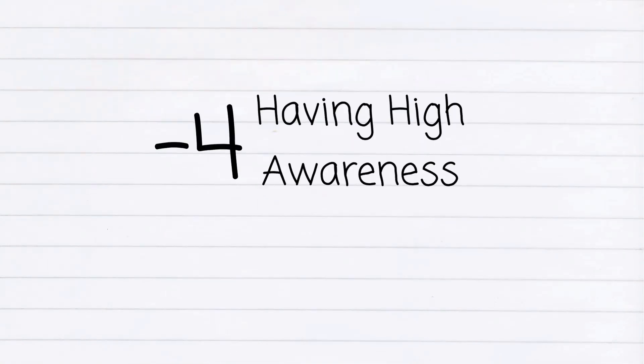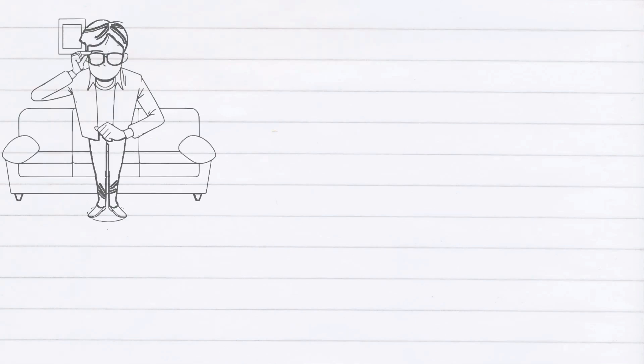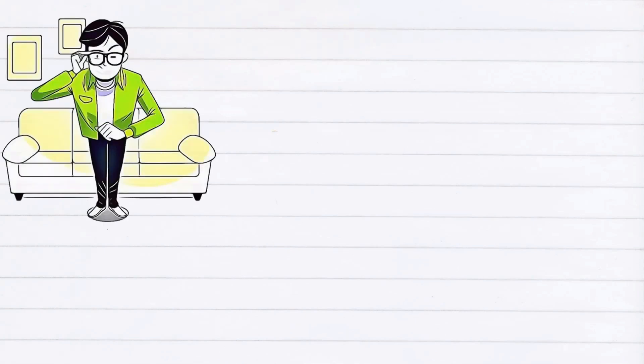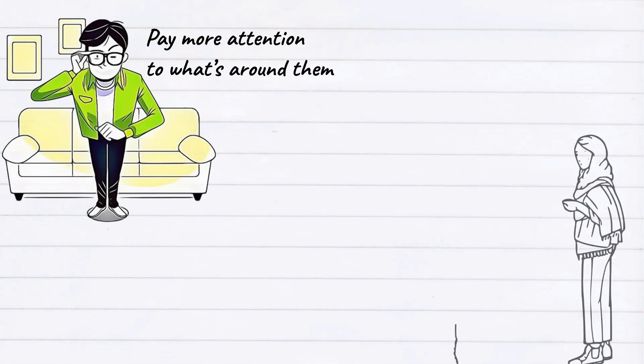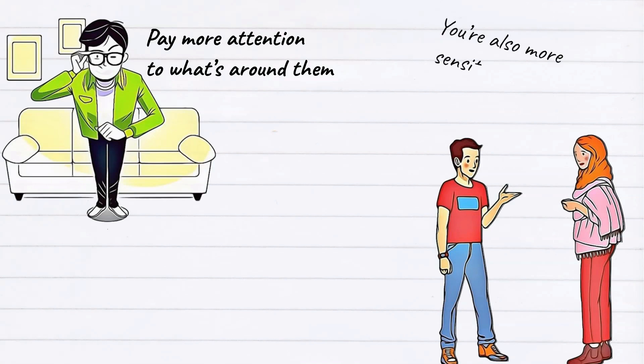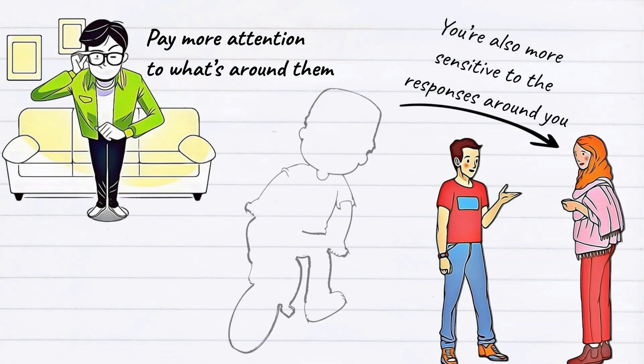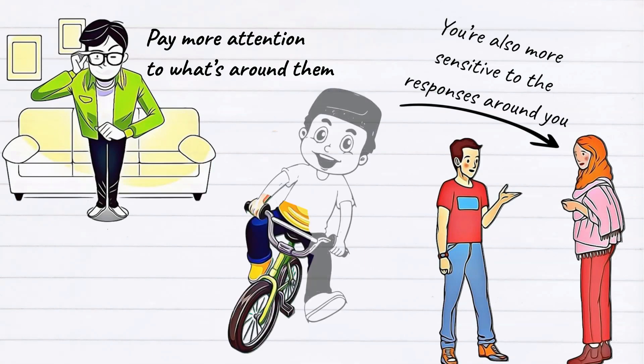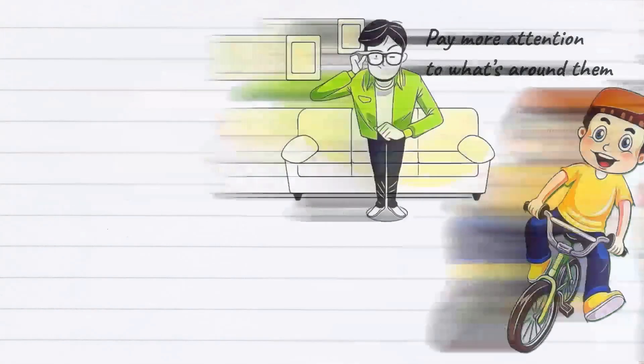Four: having high awareness. You have a high awareness of the people around you. It's undeniable that introverts tend to pay more attention to what's around them, even the little things such as the clothes or shoe color. You knew and remembered them. You're also more sensitive to the responses around you. With just a glance alone, an introverted person knows that someone is in trouble and needs help.